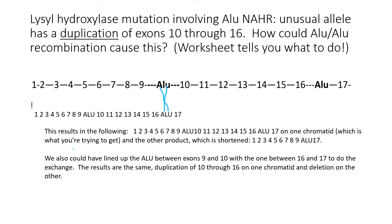Following the chromatids, one version will have exons 1 through 9, then a fused Alu, and then exon 17 — that product is a deletion, missing exons 10 through 16. The reciprocal product is what we're looking for: exons 1 through 9, then Alu, then 10 through 16, then it crosses over in the Alu, and then another 10 through 16, then Alu and exon 17. The reciprocal event leads to two abnormal chromosomes — one with a deletion and the other with a duplication of exons 10 through 16, which is the answer being requested.